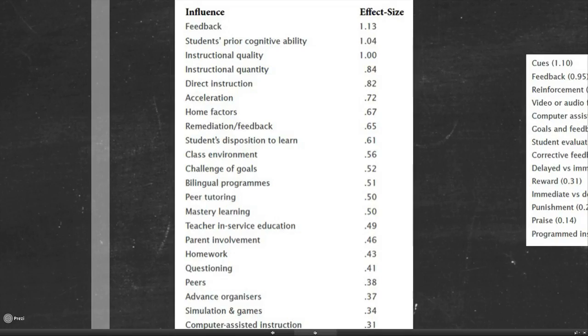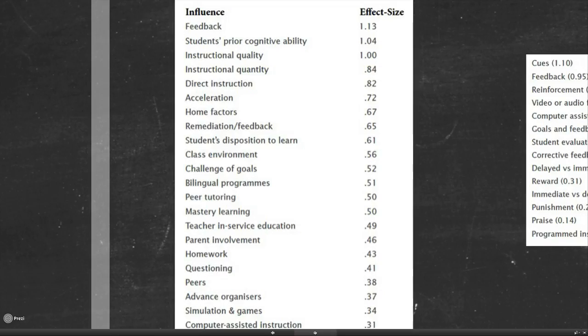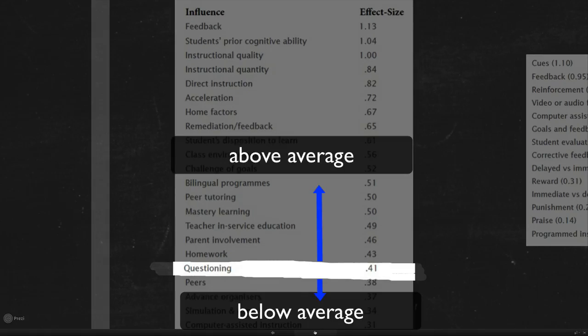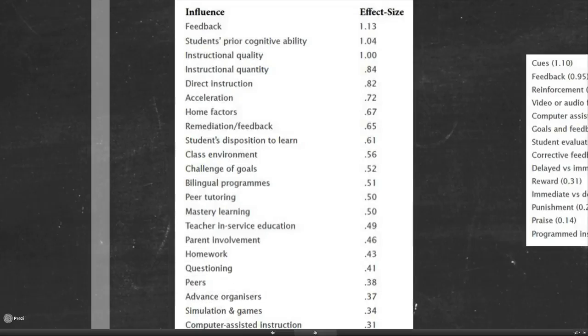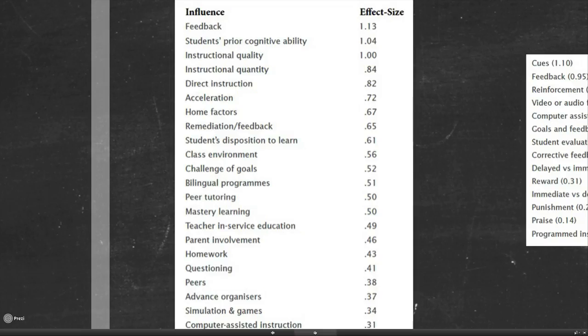With that amount of information he was able to come up with some key variables that actually improve learning, and you can see that by the effect size on the right hand side of the screen. Certain variables have very powerful effects around 1 and other effects have less effect. Around about 0.40 is the average impact of your average intervention. It normally does good but it'll do good until the point of about 0.40. Anything above that is above the average in terms of improving learning.